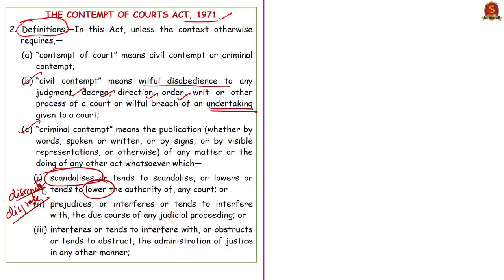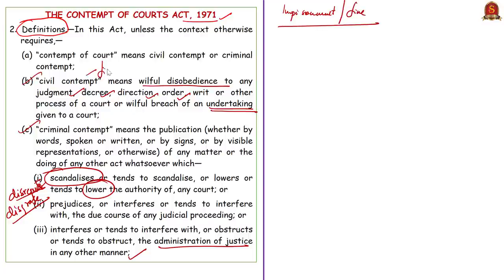Criminal contempt also includes the publication of any matter or doing any other act which prejudices or interferes with the due course of any judicial proceedings, or which interferes with or obstructs the administration of justice in any manner. The publication could be by words — spoken or written — or even by signs or visible representations such as cartoons. Contempt of court attracts punishment: simple imprisonment for up to six months, or a fine up to 2,000 rupees, or both. For civil contempt, mostly a fine may be ordered; in rare cases, the person may be detained in civil prison for not more than six months.